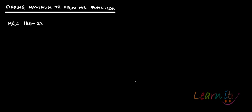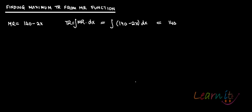Suppose you're given the MR function: MR = 140 - 2x. You have to find the maximum total revenue function. The total revenue function is the integral of MR dx, which is the integral of (140 - 2x) dx, giving 140x minus 2 times x squared over 2 plus C, which simplifies to 140x minus x squared plus C.